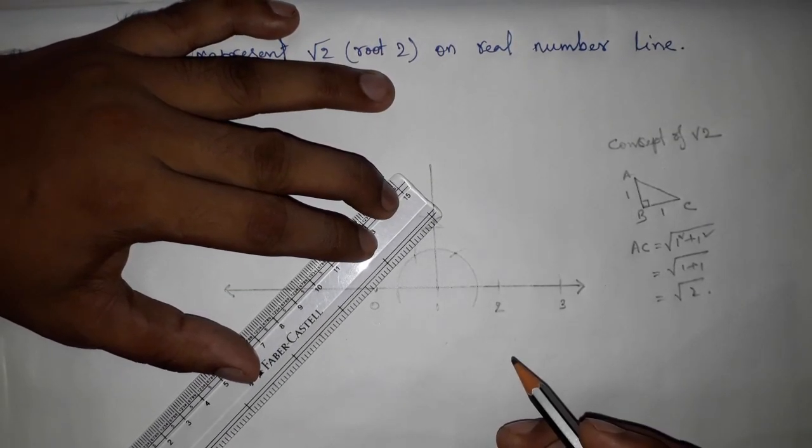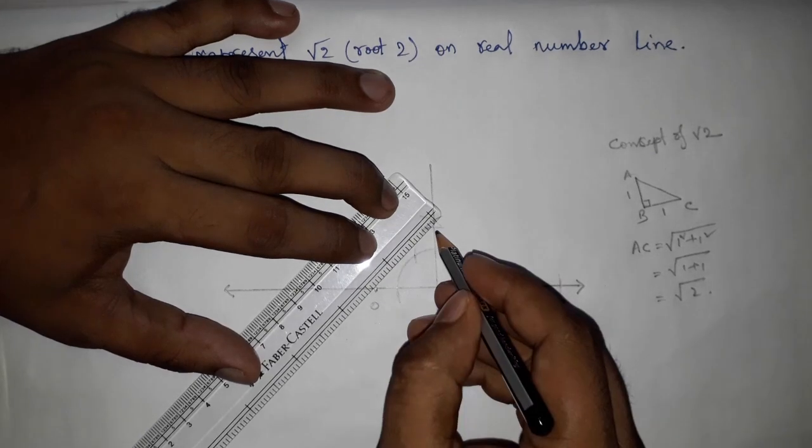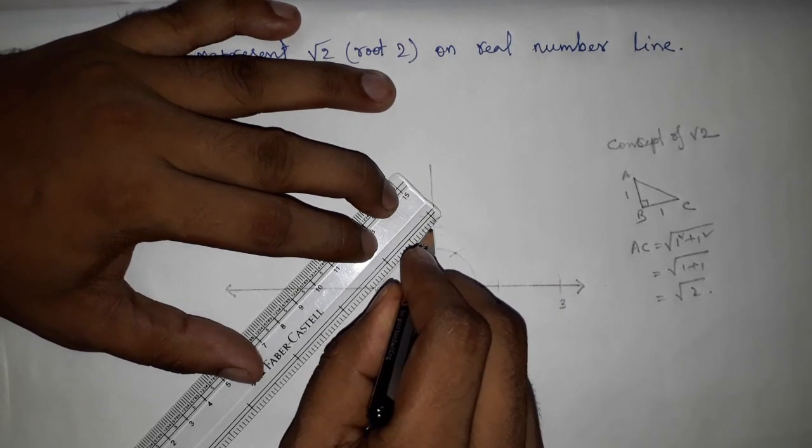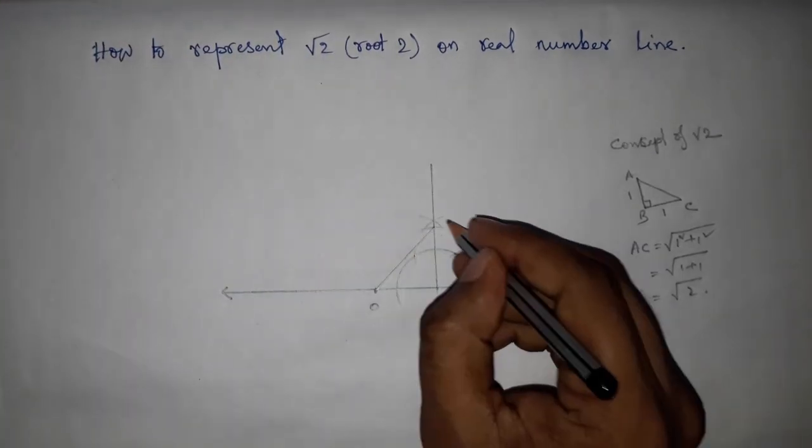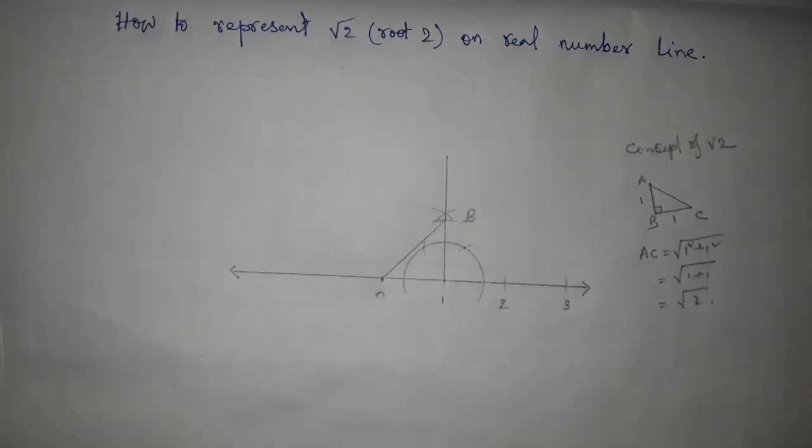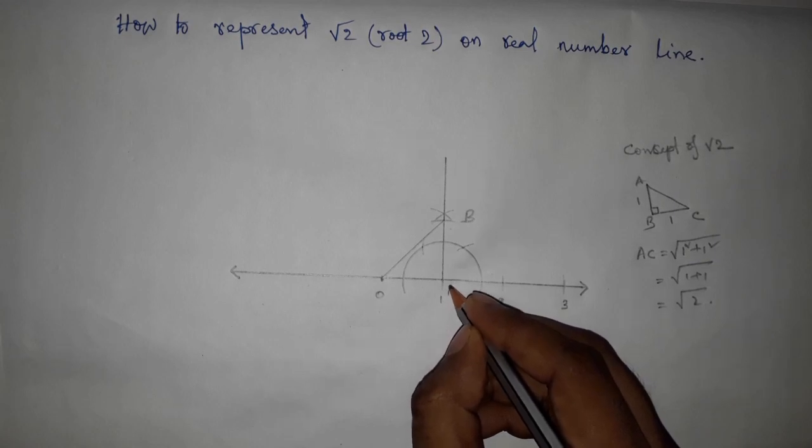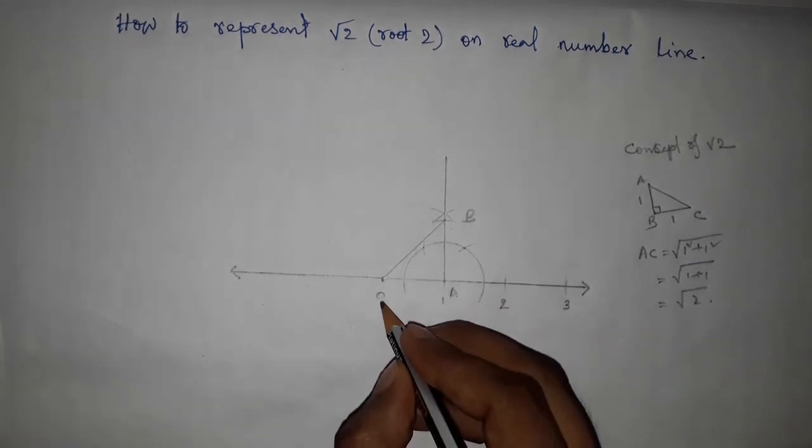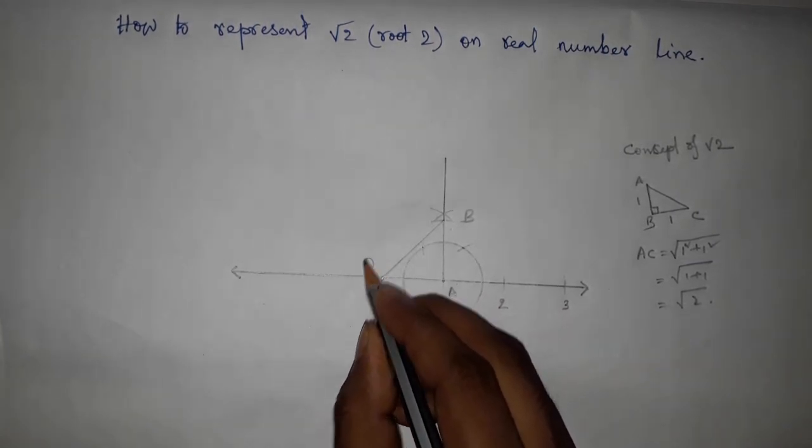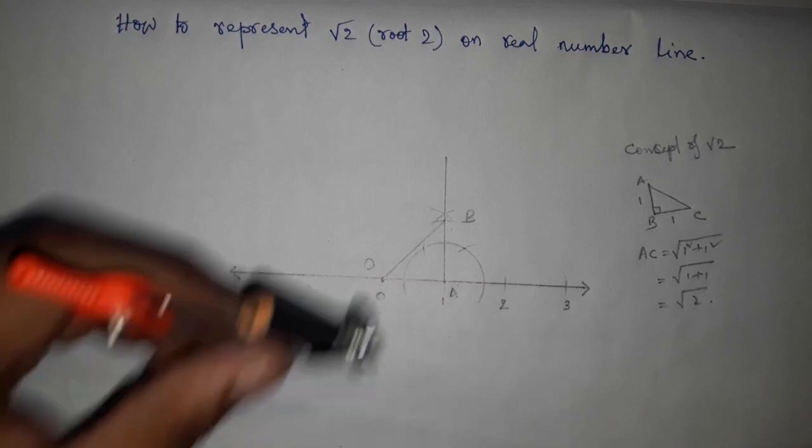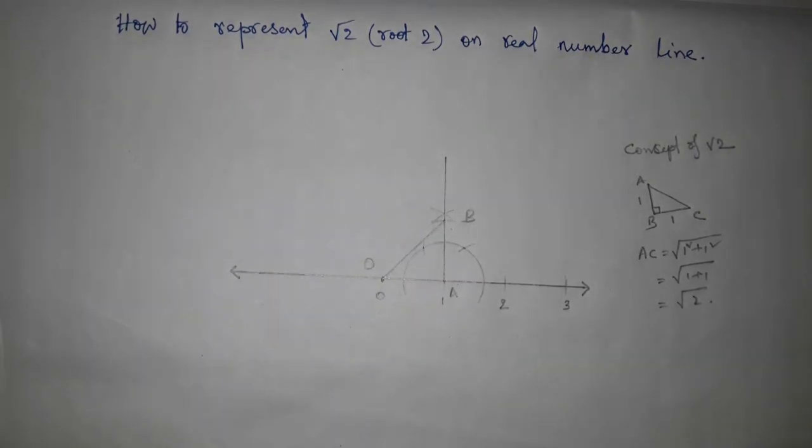Next, joining these two points to get the isosceles right angle triangle. So this is B point, and this is A point, and this is O point. So we get OAB as an isosceles right angle triangle.